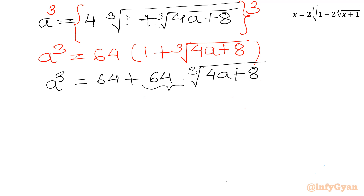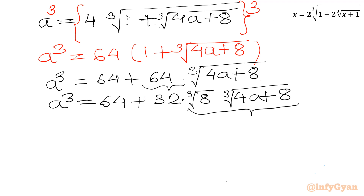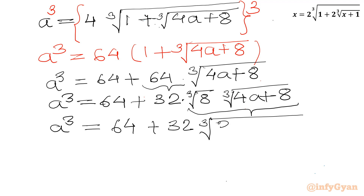Now I can split 64 as 64 plus 32 times 2, and that 2 I will write as cube root of 8. Then we have cube root of 4a plus 8. Again I will club these two radicals — cube root of 8 times cube root of 4a plus 8 — to simplify the expression.